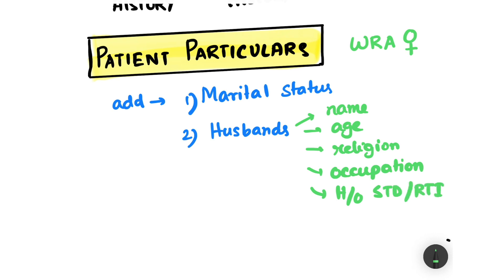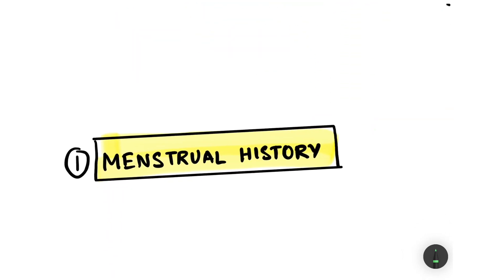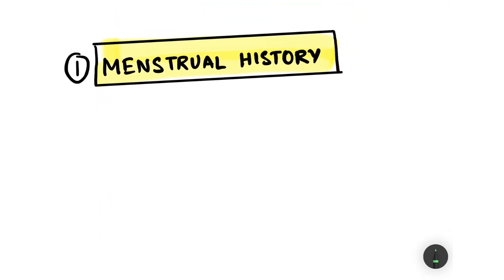We also note whether there is any history of an STD or reproductive tract illness in the husband. Additionally, you can include the drug history — any sort of medicines or drugs the husband may be taking. All this information should be included in the patient particulars.